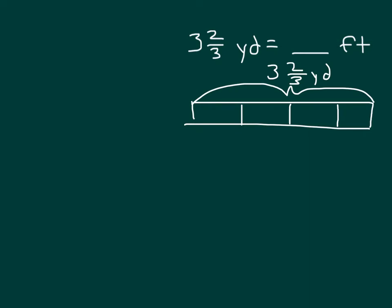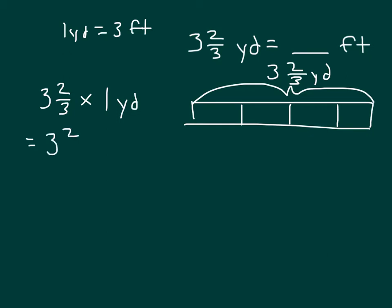So that three and two-thirds yards is the same. Let's write this out. We have three and two-thirds times one yard. Remember that one yard does equal three feet. So if we continue to work this out, we would go three and two-thirds times three feet. So remember, in our diagram, we had each of these equaling one yard.